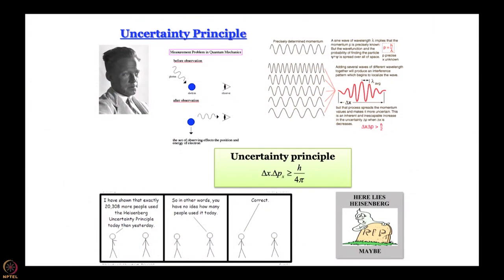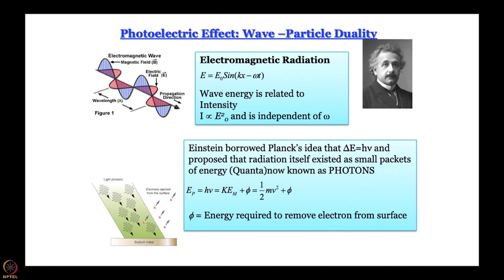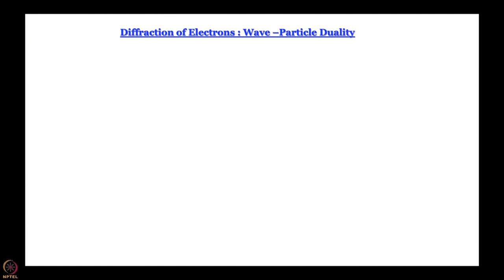In this module, we will try to understand the wave nature of matter, and it sounds quite maddening because it is very difficult to believe that matter can have wave nature. But as you have seen, the uncertainty principle was sort of the last nail in the coffin of Bohr theory, so a deterministic approach of describing atomic structure is clearly not going to work. And in the photoelectric effect, the wave-particle duality of light was already established — so the question was: does such a duality exist for matter as well? Let us talk about the experiments that led to the realization that matter can indeed have wave-like nature.